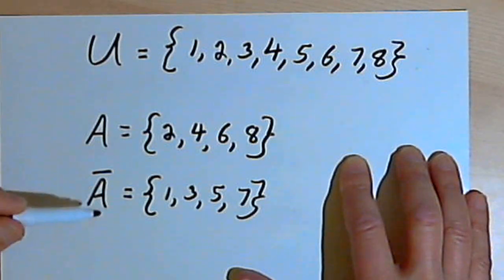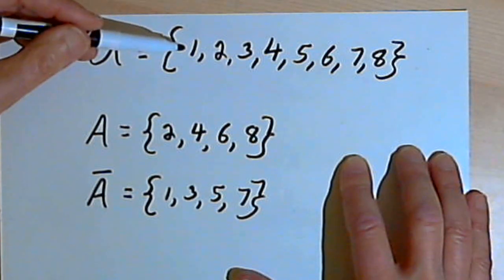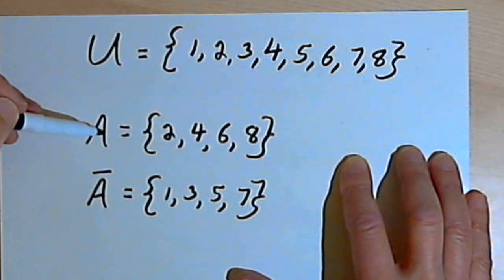Okay? So once again, the complement of A is all of the numbers in my universal set which are not in set A.